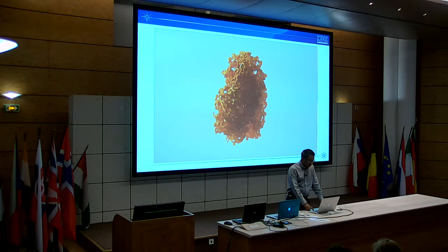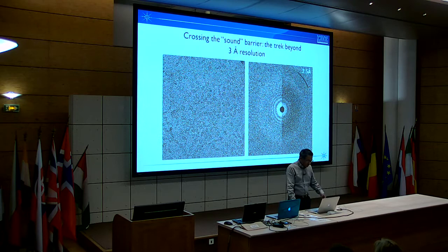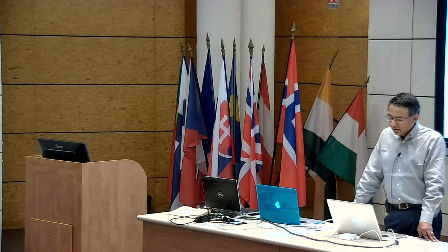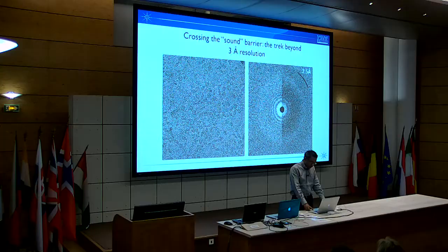The revolution in this field has been driven, in good measure, by the development of direct electron detectors. This is an image of beta-galactosidase taken with the Gatan K2 detector, where single images contain information going far beyond 3 angstroms, close to 2.5 angstroms here. It's the use of these direct detectors that really led us to begin looking at smaller protein assemblies.